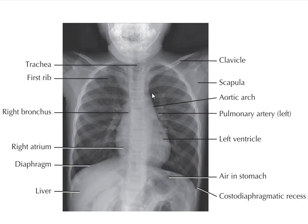Here is the right bronchus, and here is the costo-diaphragmatic recess. This is the diaphragm. On the left side, here is air in the stomach, here is the liver, and over here is the diaphragm.